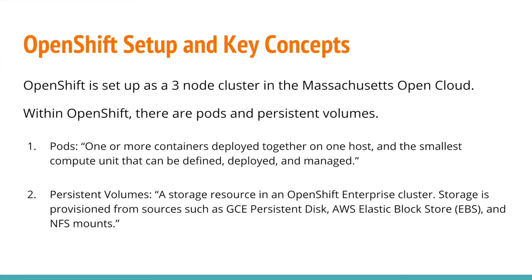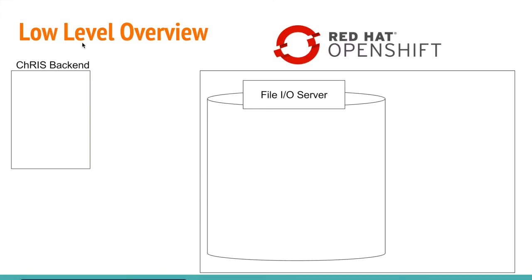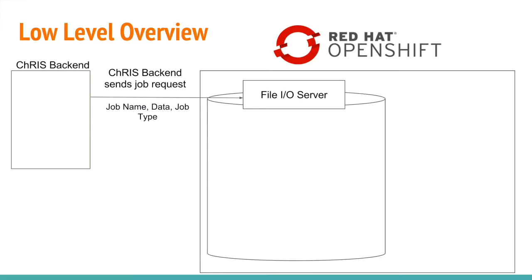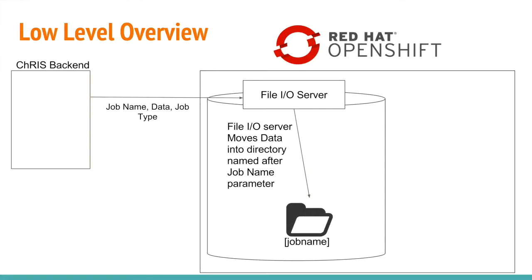Here is a low-level overview of our system workflow. To initiate running a job in OpenShift, the CRIS backend must send a job request to the file-io-server container running in OpenShift. The command has three parameters: the job name, which is randomly generated using an OpenShift API to ensure uniqueness; the data needed for running the job; and the job you intend to run on that data. The file-io-server handles these requests by moving the data into a directory named after the job-name parameter it was passed.